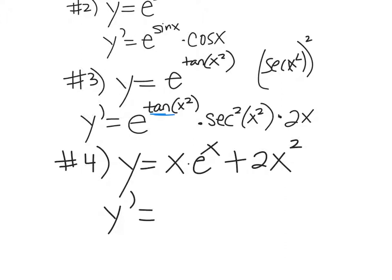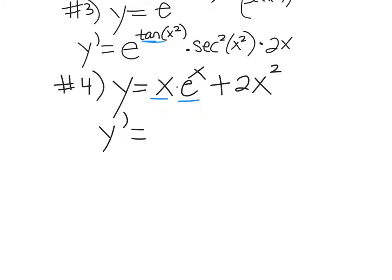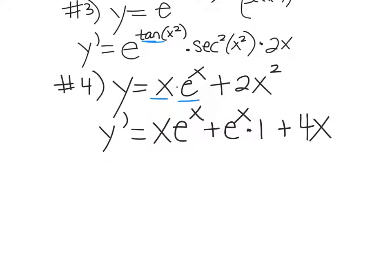What's shouting at you? Product rule — x times e to the x requires product rule. So A is x and B is e to the x. We go A times B prime: the derivative of e to the x is e to the x. Plus B times A prime, which is 1. And then plus 4x from the derivative of 2x squared. There's nothing to simplify further — that's the answer.